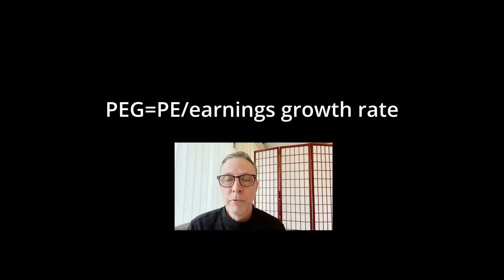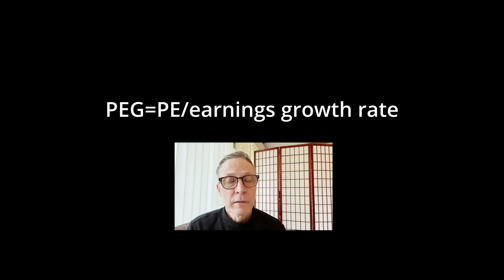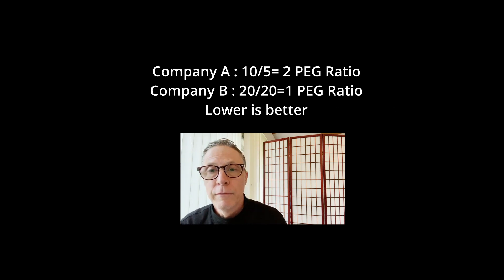The next ratio we're going to talk about is also an important valuation ratio — it's the PEG ratio. The PEG ratio incorporates the P/E ratio but also accounts for a company's expected earnings growth. It is simply the P/E ratio divided by the company's expected earnings growth rate. Let's go back to Company A and B from the previous example — Company A had a P/E ratio of 10.